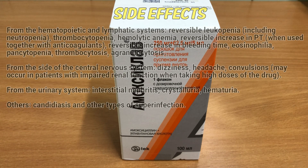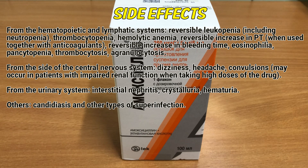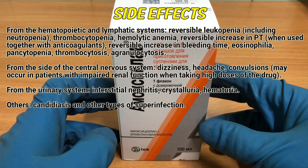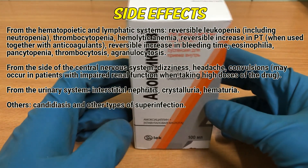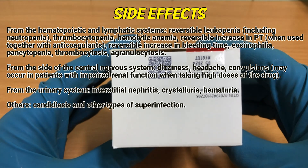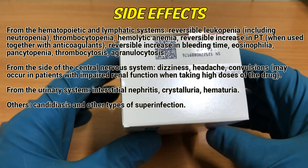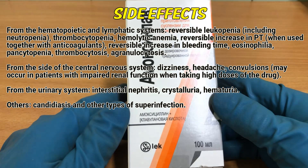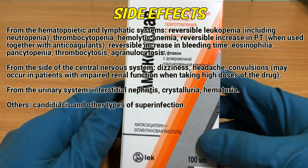From the hematopoietic and lymphatic systems: reversible leukopenia including neutropenia, thrombocytopenia, hemolytic anemia, reversible increase in prothrombin time when used together with anticoagulants, reversible increase in bleeding time, eosinophilia, pancytopenia, thrombocytosis, agranulocytosis. From the central nervous system: dizziness, headache, convulsions — may occur in patients with impaired renal function when taking high doses of the drug.